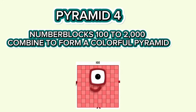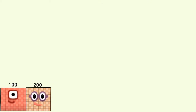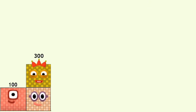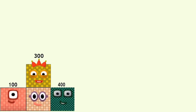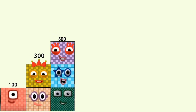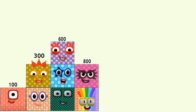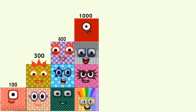Number blocks 100 to 2000 combine to form a colorful pyramid. 100, 200, 300, 400, 500, 600, 700, 800, 900, 1,000.